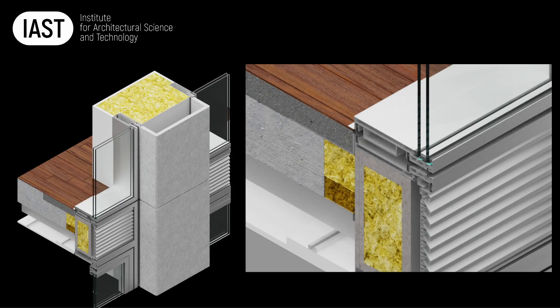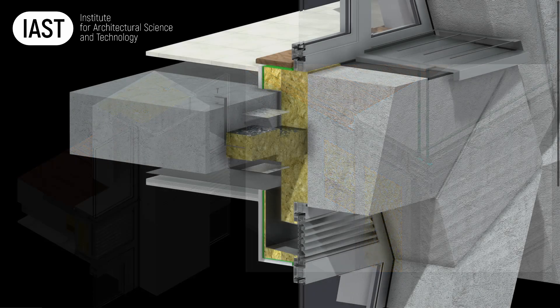With a unitized facade, it's possible to design the system so that the mullions or transoms span between the floors. This makes unitized facade a more risk-averse option when it comes to the risk of flanking sound transmission.